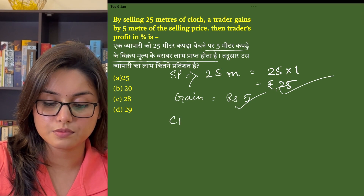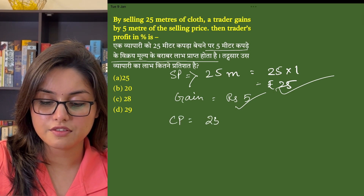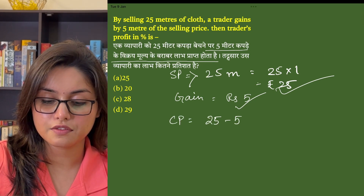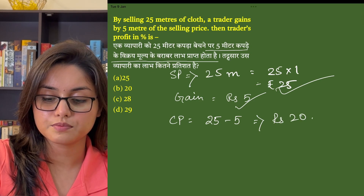So what will the cost price be? It will be 25 minus 5, where we get the cost price as 20 rupees.